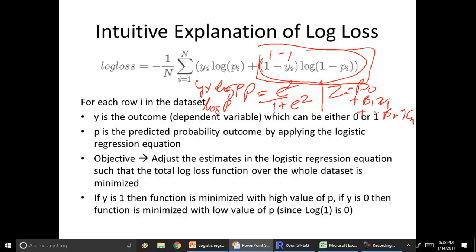How is this error minimized? Log of p is 0 if p tends to 1. If probability is approaching 1 where y is 1, then this whole log loss function tends to approach 0.